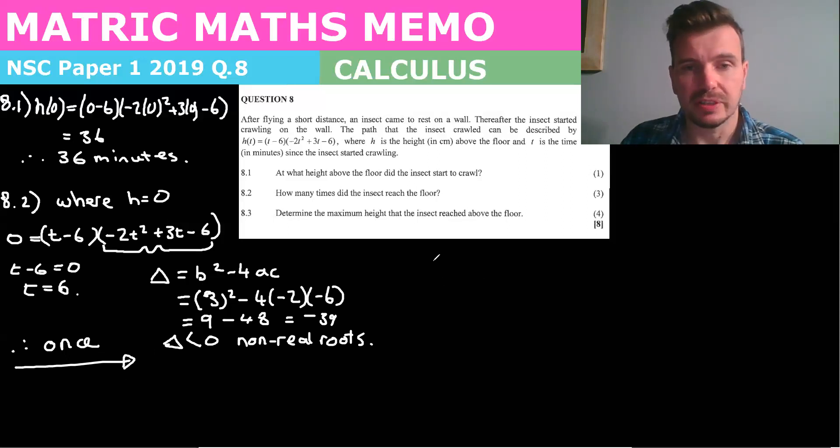8.3. Determine the maximum height. Well, as I said earlier, when you are dealing with derivatives, at some point, I mean, calculus. At some point, you're going to have to find that derivative. And especially if you see maximum, because when it says maximum height, that means find the derivative and make it equal to zero.